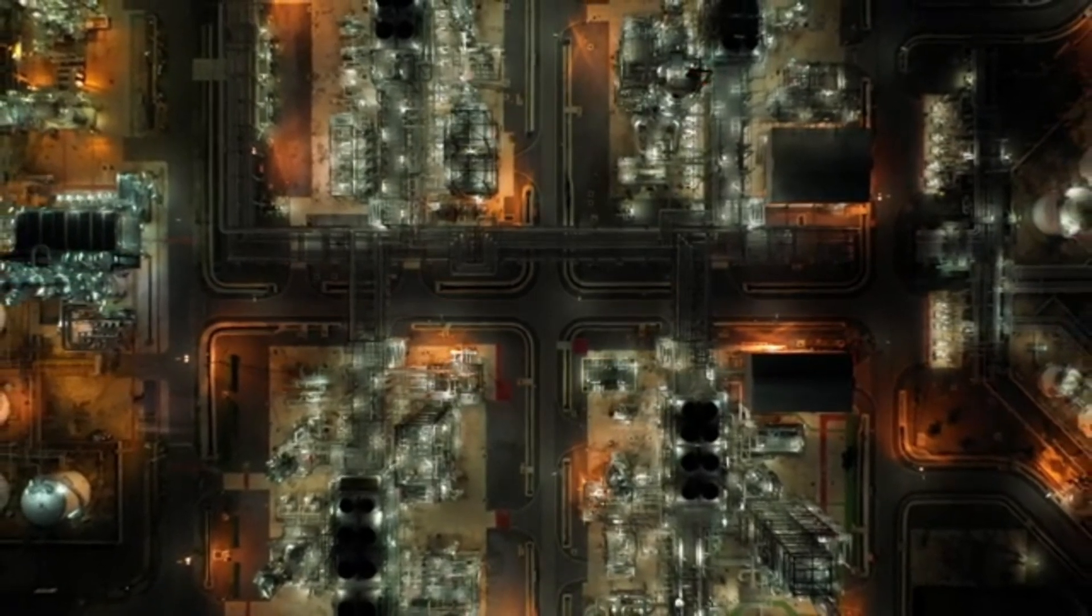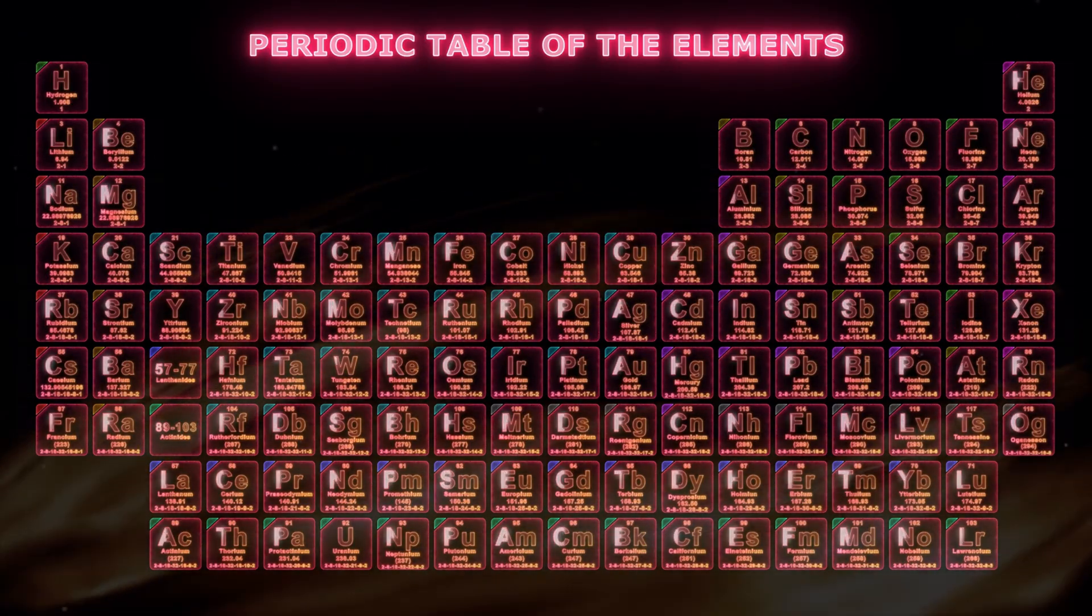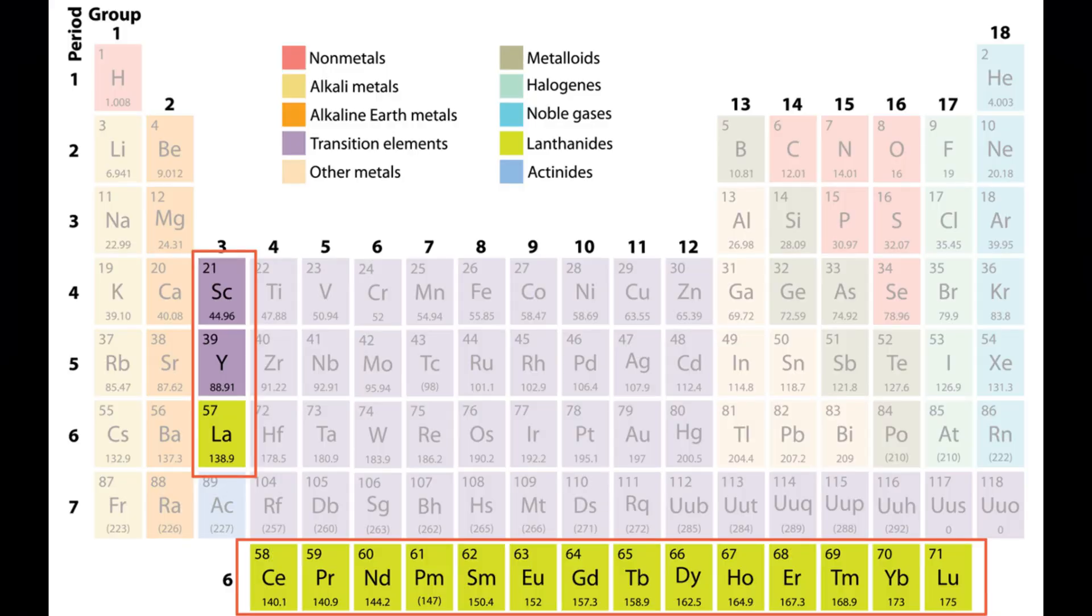Let's begin with a basic understanding of what rare earth elements are. The term refers to 17 chemically similar elements, including the 15 lanthanides plus scandium and yttrium. Despite their name, they aren't particularly rare in Earth's crust, but their extraction and purification are notoriously difficult.